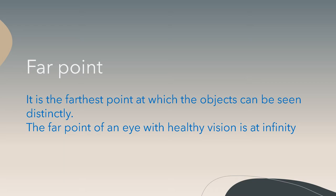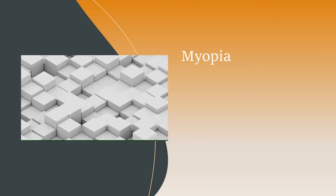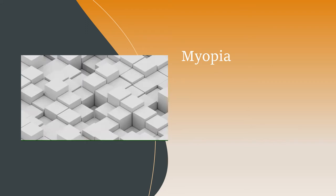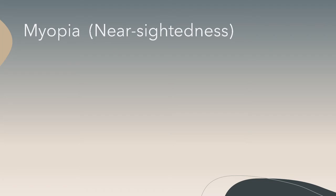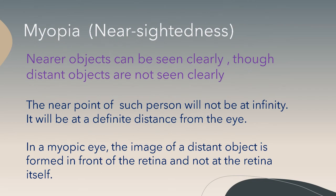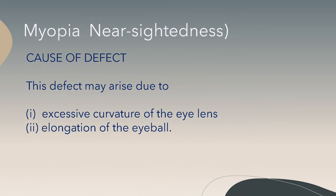Myopia, or near-sightedness: nearer objects can be seen clearly, though distant objects are not seen clearly. The far point of such a person will not be at infinity; it will be at a definite distance from the eye. In a myopic eye, the image of a distant object is formed in front of the retina and not at the retina itself.